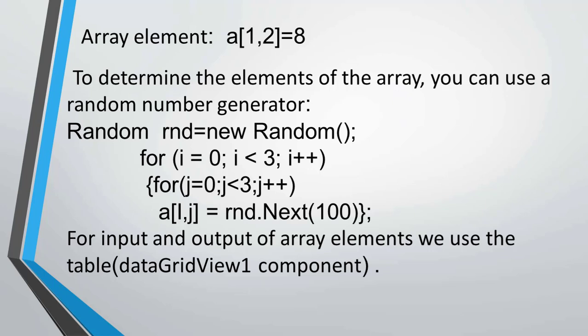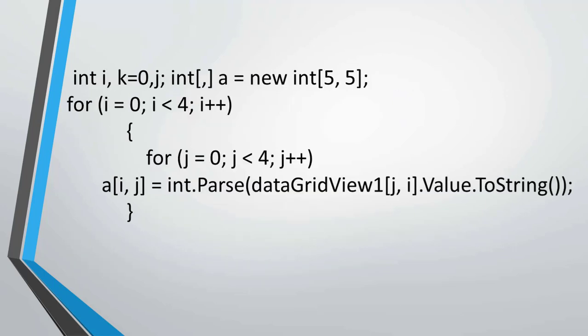To determine the elements of the array, you can use a random number generator. For input and output of array elements, we use the table DataGridView component. You can see on the screen the two-dimensional array, and for input values we use the DataGridView component.